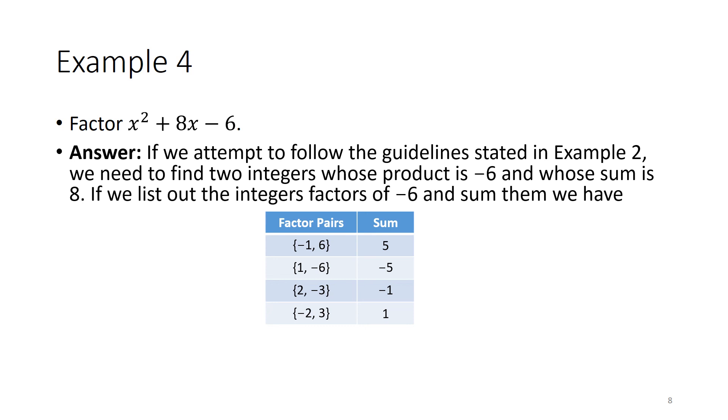We have negative 1 and 6, which adds up to 5. We have 1 and negative 6, which adds up to negative 5. We have 2 and negative 3, which adds up to negative 1. And we also have negative 2 and positive 3, which adds up to positive 1.